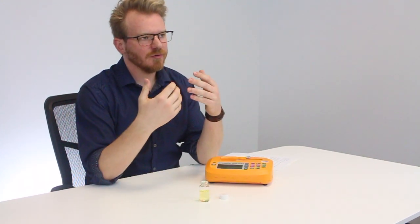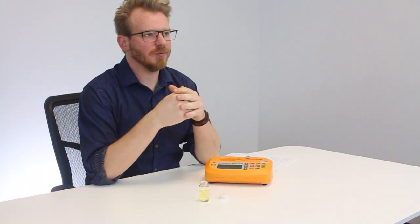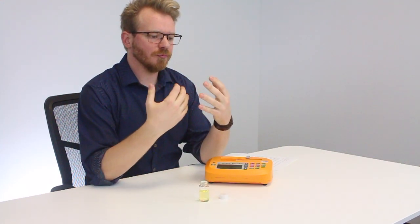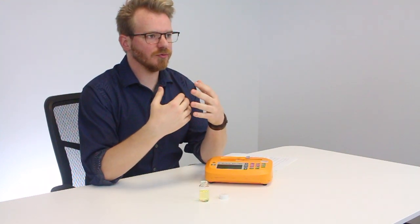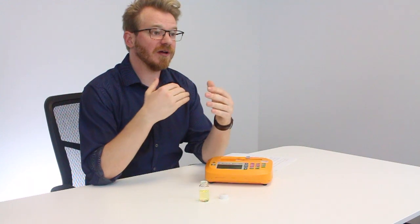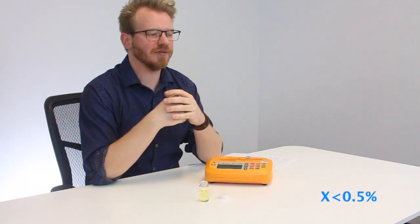Run that, and we're looking for our viscosity to come into 2% of the listed value on the bottle. When we're doing replicates, and I typically do triplicate measurements for my standards, we're looking for those values to fall within 0.5% of each other.